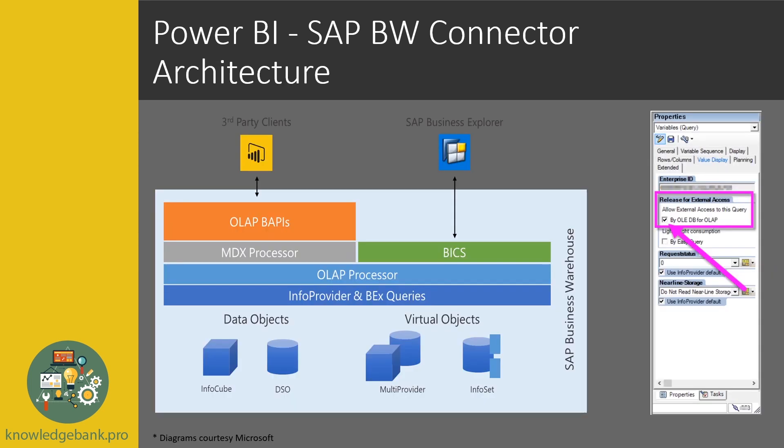A question I keep getting asked is: my Business Objects report connecting to the same BEX query runs in one second, whereas Power BI takes three seconds. The reason is that Business Objects and other SAP tools have access to the BICS interface, which is a proprietary SAP interface. Third-party tools like Power BI do not have access to this interface, so Power BI goes through the MDX protocol, which is more time-consuming. You'll never get the same performance as a Business Objects tool.